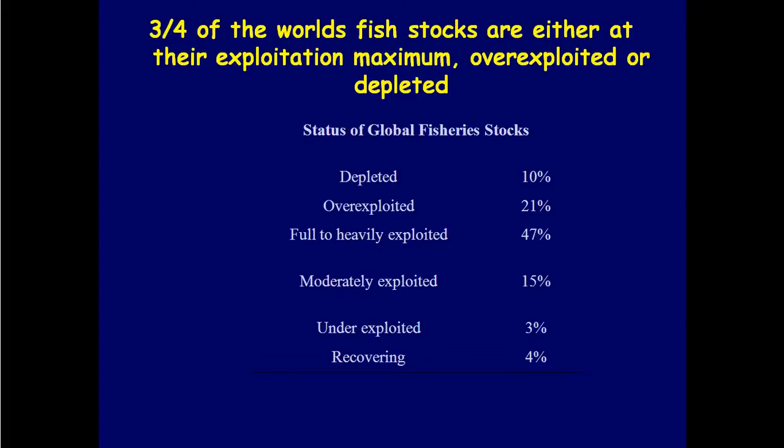Single species management has just not worked overall. Looking at global fisheries statistics: 10% depleted, 21% over-exploited, 47% fully to heavily exploited — so around 78% are fully or over-exploited. Moderately exploited accounts for 15%, under-exploited 3%, and recovering just 4%.